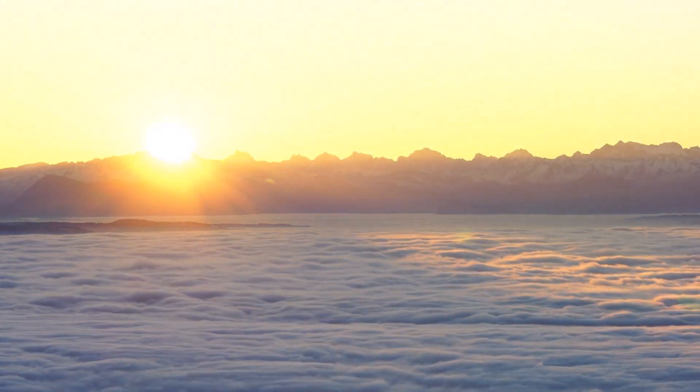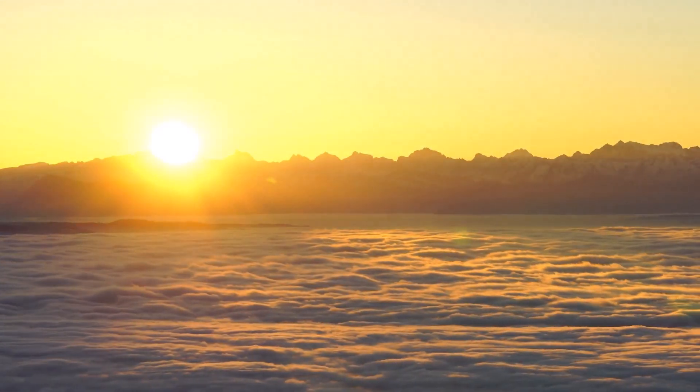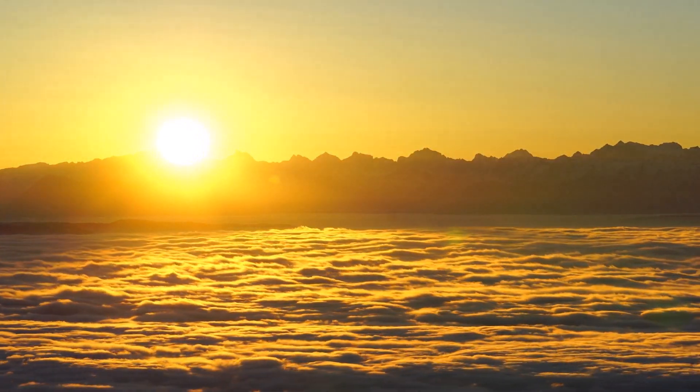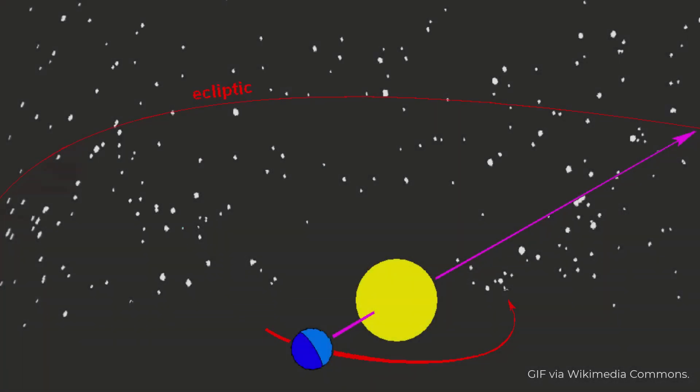Since the Earth's axis is tilted by around 23 and a half degrees with respect to its orbital plane the Sun appears to move sinusoidally in the sky over the course of a year. The Sun's track on the celestial sphere is known as the ecliptic and its midline is known as the celestial equator.